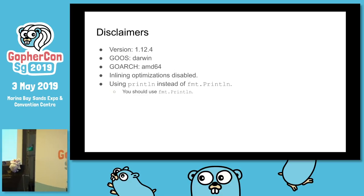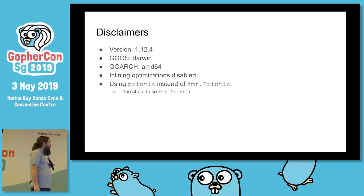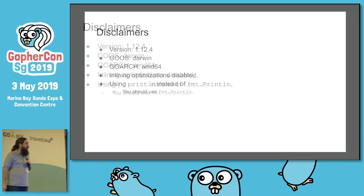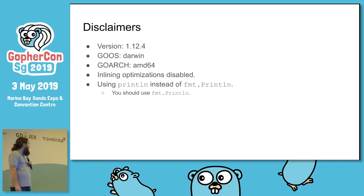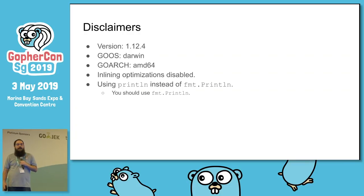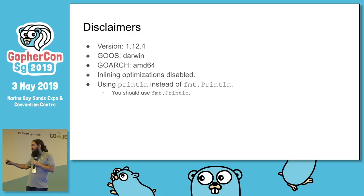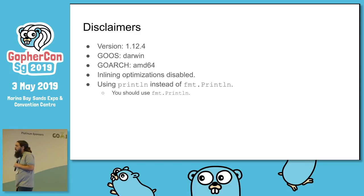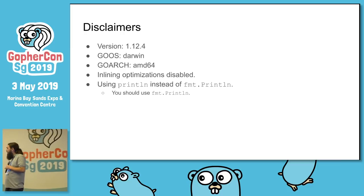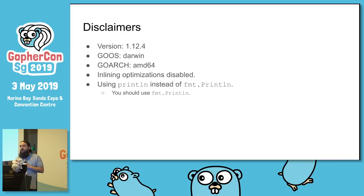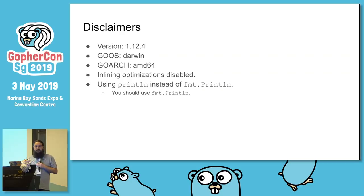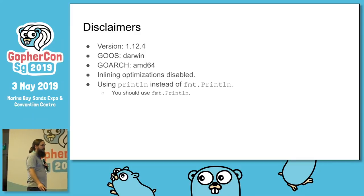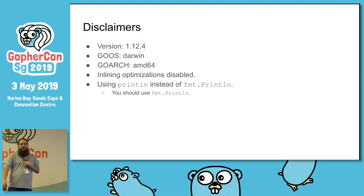A couple of disclaimers before I go further. What I'm going to show you is accurate as of Go version 1.12.4. What I'm showing you are mechanics — these are things that could change in future versions, and some of the specifics of my diagrams could also change. The general ideas will remain the same. Also, this is for my 64-bit Mac. I have certain optimizations disabled to make my points, and in the code I'm using the built-in function println instead of fmt.Println — you should just use fmt.Println.